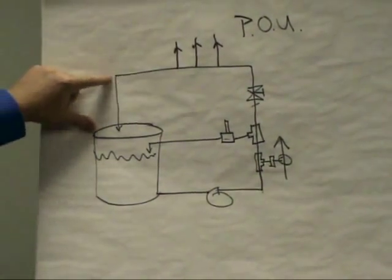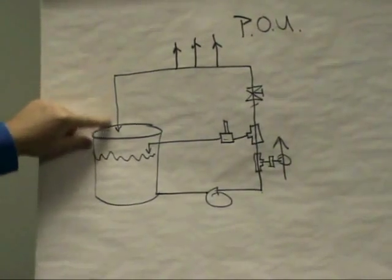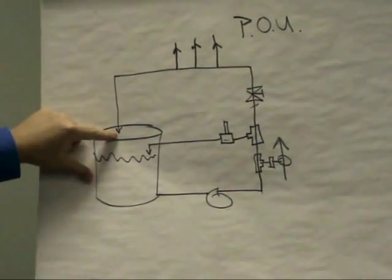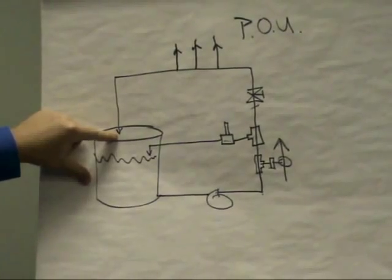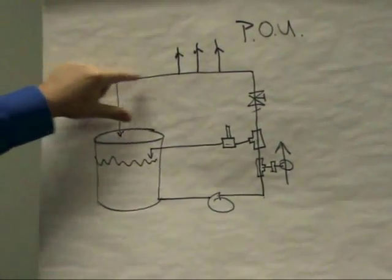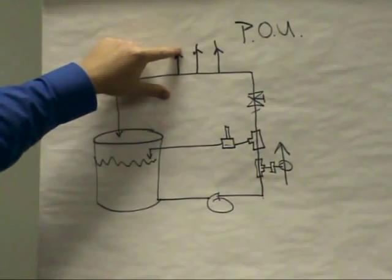However, without a back pressure regulator, all the pressure would flow to the tank at atmospheric pressure. There would be no pressure in the pipeline to push the liquid up to the points of use.